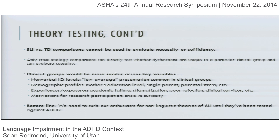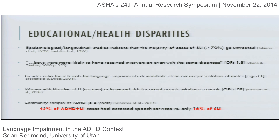As I mentioned early on, the majority of cases of specific language impairment never receive services. In particular, if you're a girl with specific language impairment, you're out of luck — boys are much more likely to receive services even with the same diagnosis and same level of language impairment. There is also a clear overrepresentation of males in referrals for language assessments. This is unfortunate because women with positive histories of language impairment are actually at more risk for negative outcomes than their male counterparts, and sexual assault is elevated in women with a history of language impairment.